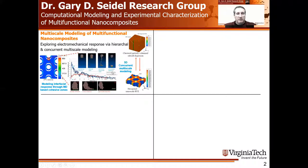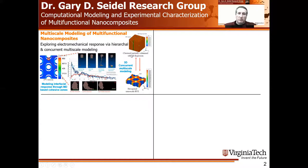Multiscale for us typically means starting at the atomistic scale, with all-atom simulations using molecular dynamics, and then moving to some continuum scale. So we might move from the atomistic scale to a microscale to a mesoscale, and then up to a macroscale simulation.